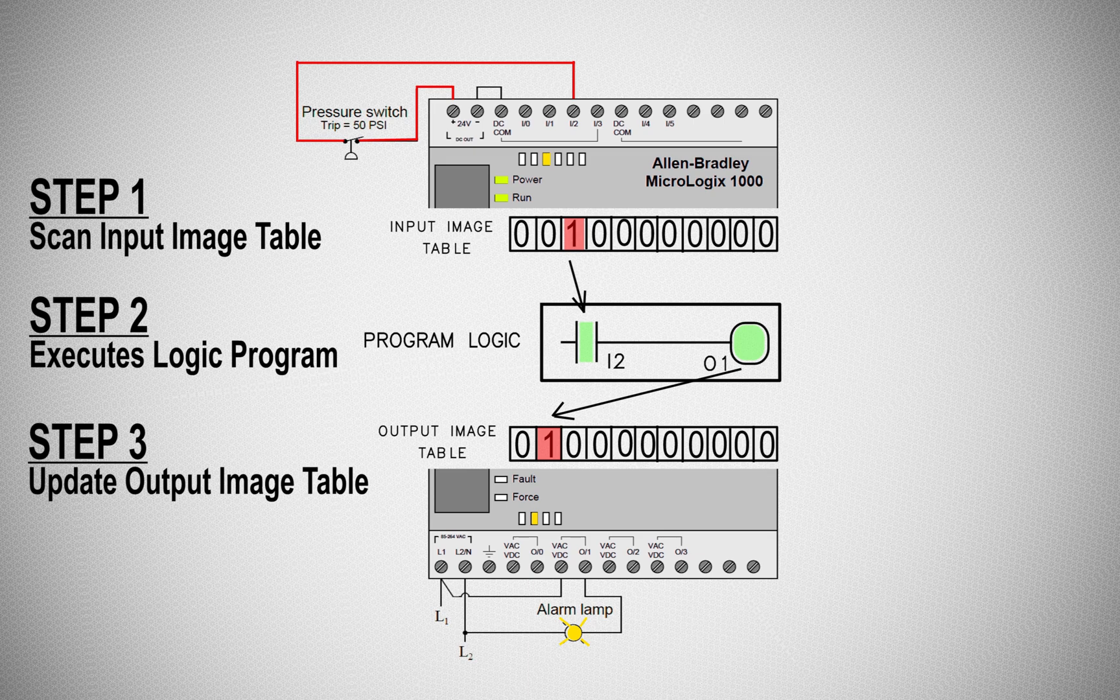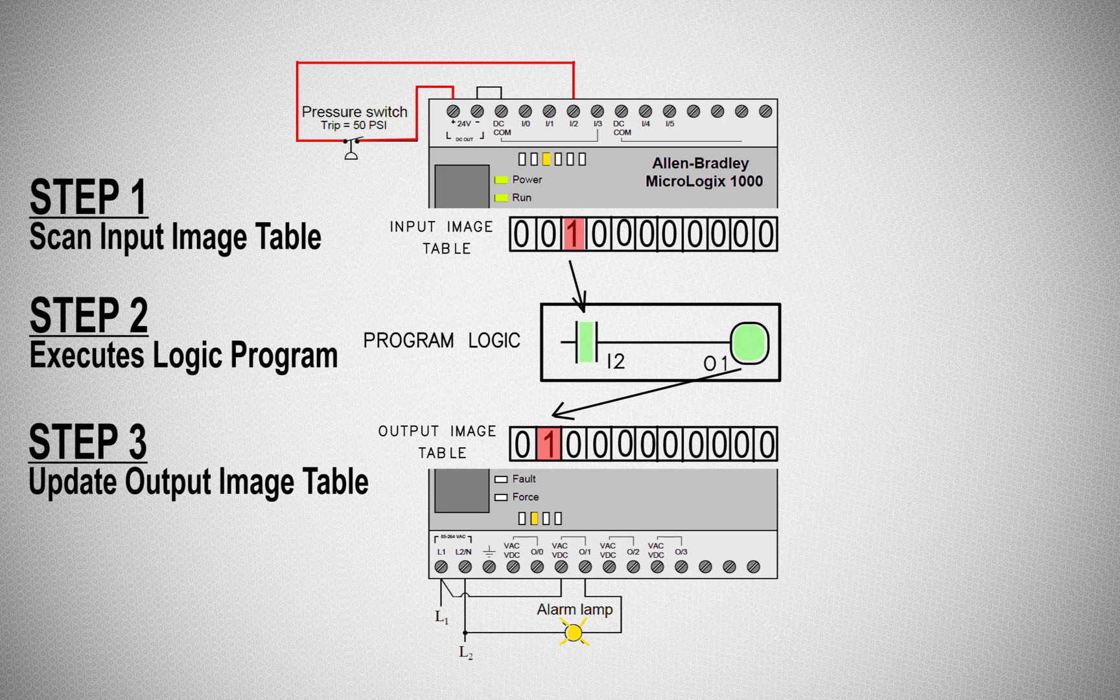From step three, the PLC scan cycle will go back to step one to scan the input image table, and this cycle goes on indefinitely until the PLC is powered on.